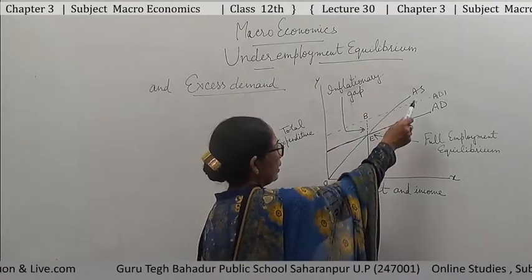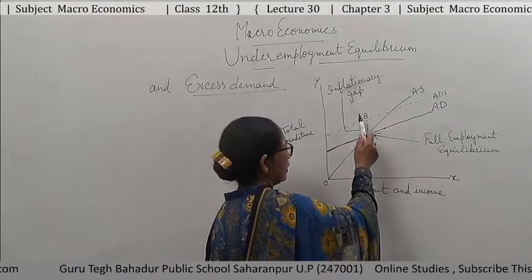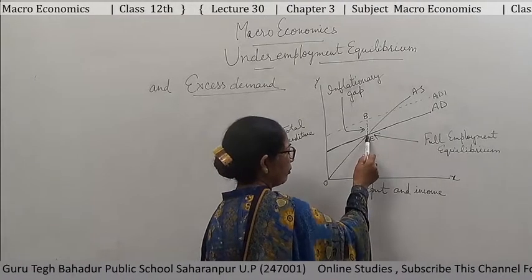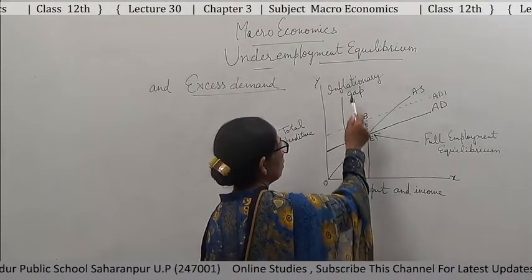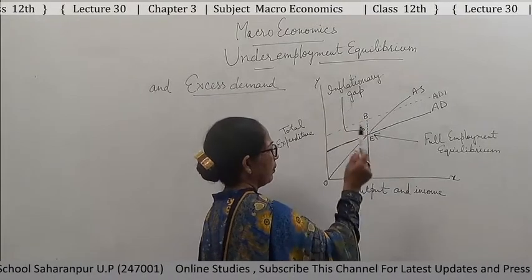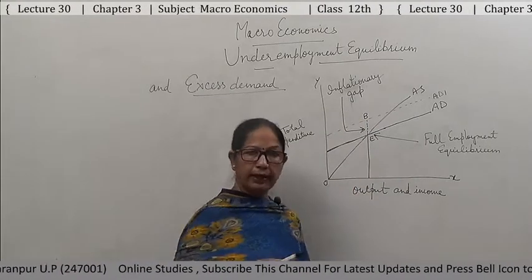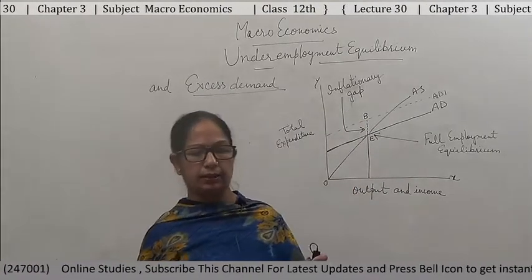The gap between points B and E is known as the inflationary gap. When aggregate demand exceeds aggregate supply at full employment level, this gap is called the inflationary gap, and E is the equilibrium at full employment level.